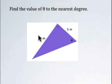So for our next question, I want you to find angle theta here, given the side lengths 9 meters and 5 meters, and round the value of theta to the nearest degree.